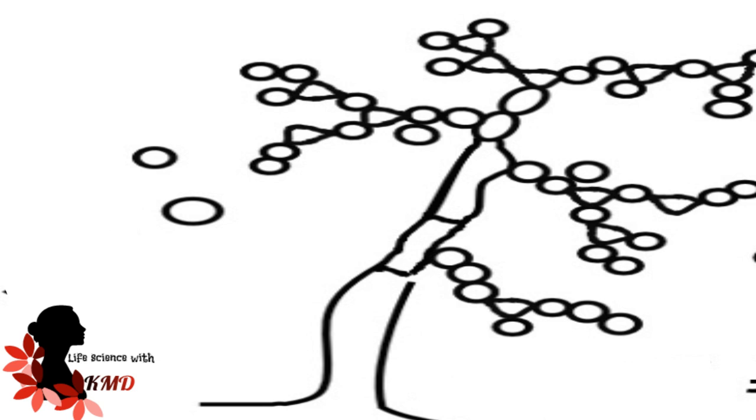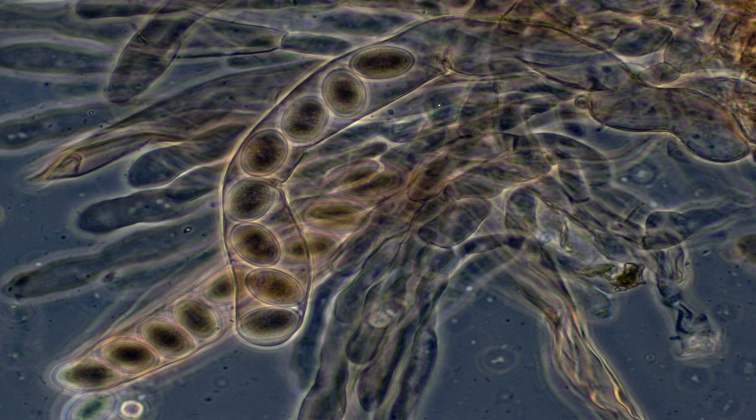Reproduction in Neurospora is of two types: sexual and asexual. In asexual reproduction, there are two types: microconidia and macroconidia. Macroconidia are large, ovoid, multi-nucleate structures that develop at branch tips by budding. Microconidia are uninucleated, sticky, and comparatively small, developing on terminal or lateral positions. Both microconidia and macroconidia on germination produce mycelium.